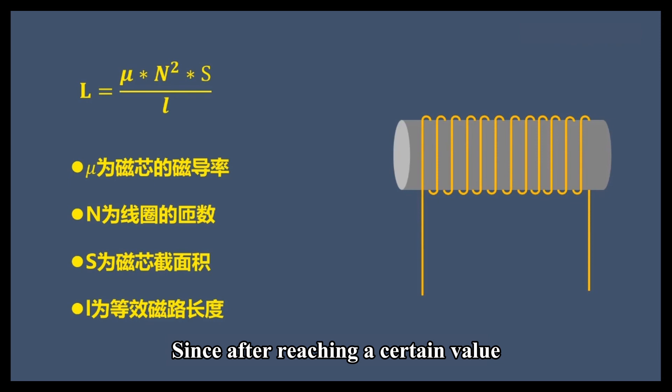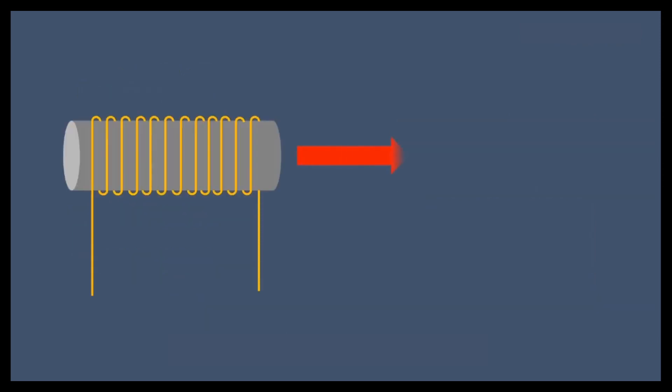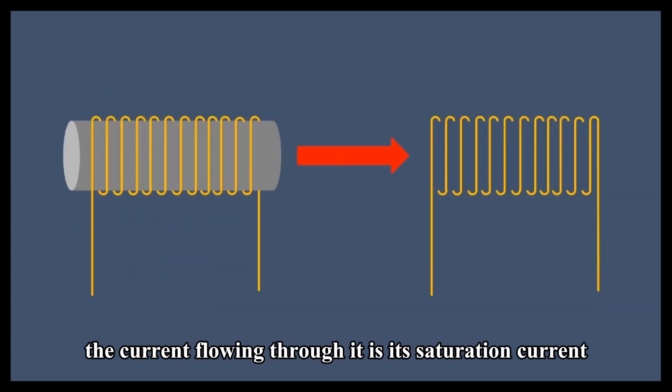Since after reaching a certain value, the magnetic permeability gradually decreases as the current increases, so does the inductance value. When the inductance value drops by 30%, the current flowing through it is its saturation current.